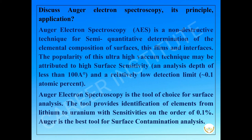Auger electron spectroscopy is the tool of choice for surface analysis. The tool provides identification of elements from lithium to uranium with sensitivities on the order of 0.1%. Auger is the best tool for surface contamination analysis.